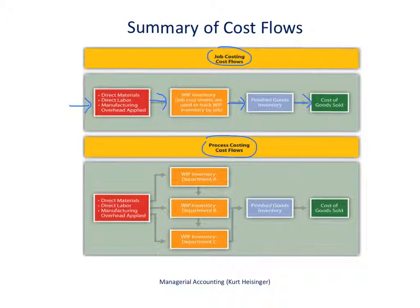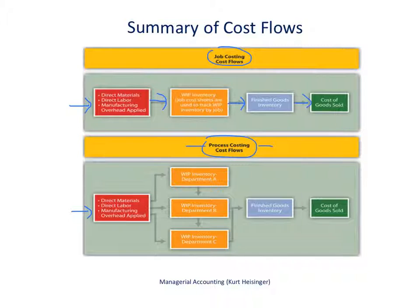Looking at process costing, it's a little different, but we have the same inputs: direct materials, direct labor, and manufacturing overhead. Those product costs ultimately go into each work in process inventory account set up for each production department. We'll be discussing a company with two different departments — assembly and finishing — so each of those departments will have direct materials costs, direct labor costs, and manufacturing overhead costs.